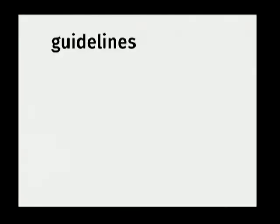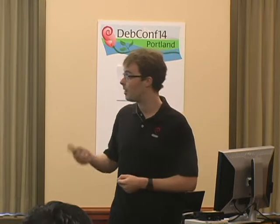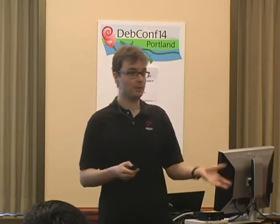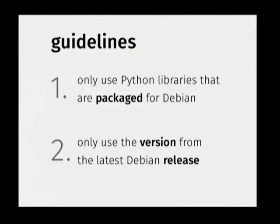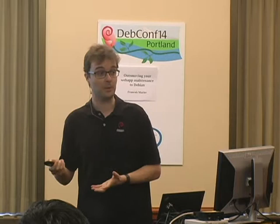Now, when we started the project, we decided to add a few rules to simplify the maintenance burden. First one was: only use Python packages that are packaged for Debian. So if I want to use a library and it's not in Debian, I need to find another one that is in Debian, or package it myself and wait until the next release. Secondly, only use the version that's in the latest Debian release, which means right now I don't use Django 1.6 — which is the latest stable release. I use 1.4 and I'll upgrade to 1.6 whenever I upgrade to Jessie.